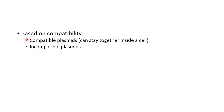Based on compatibility, plasmids are classified into compatible plasmids and incompatible plasmids. Two plasmids can stay together inside a cell only if they are compatible plasmids.